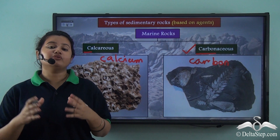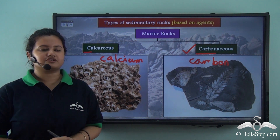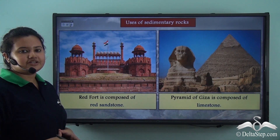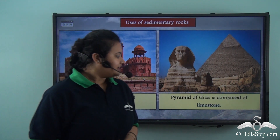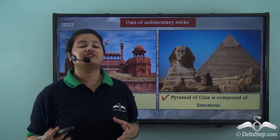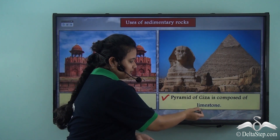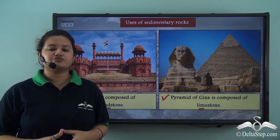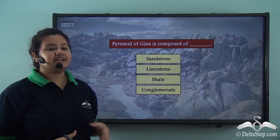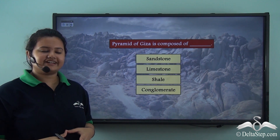Till now we have discussed different classifications of sedimentary rocks. Now let us discuss a few uses of sedimentary rocks. Red Fort is composed of red sandstone, a type of sedimentary rock. The Pyramid of Giza, considered one of the seven wonders of the world, is composed of limestone, another type of sedimentary rock. Thus, sedimentary rocks are widely used for building and construction purposes. Quick question: what is the Pyramid of Giza composed of? The correct answer is limestone.